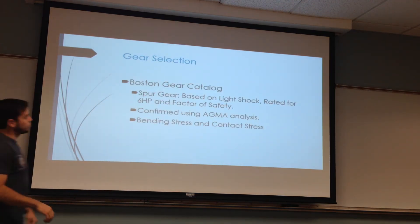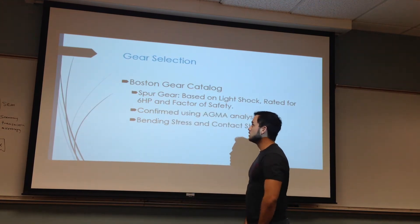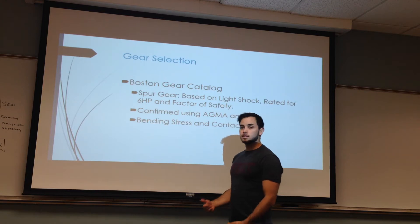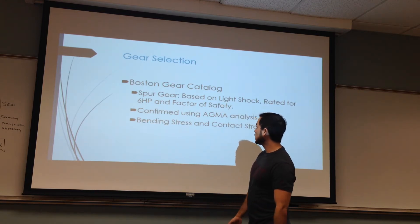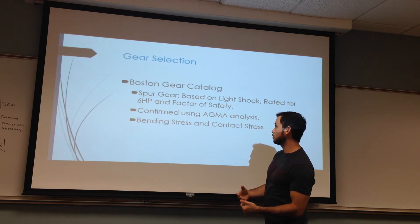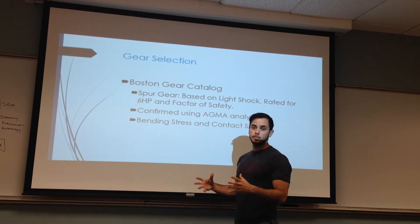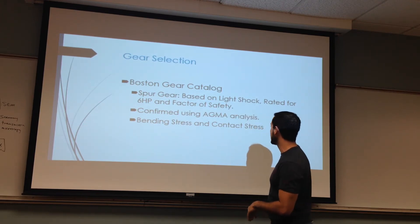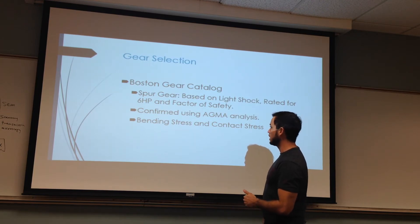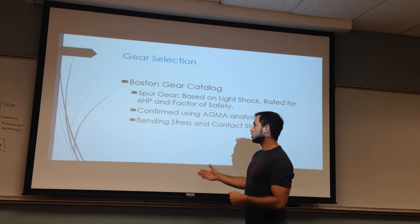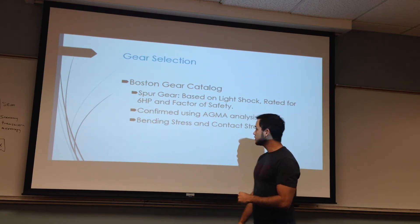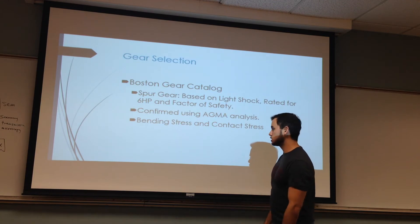We selected the gears using the Boston Gear Catalog. The way you select gears in the Boston Gear Catalog, first you base yourself on the light shock, which is one of the requirements — the gearbox had to take a light shock. It was rated for 6 HP, and then you calculate the factor of safety. We confirmed this by using the AGMA analysis and also using the bending stress and the contact stress.